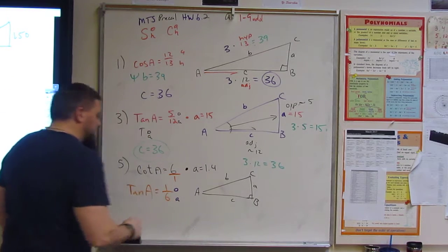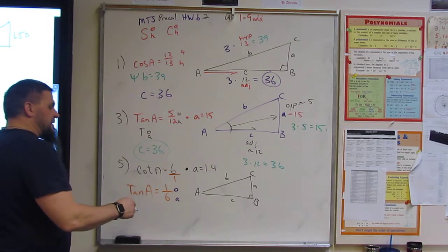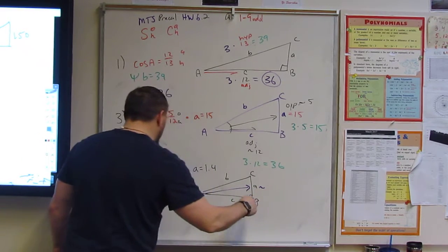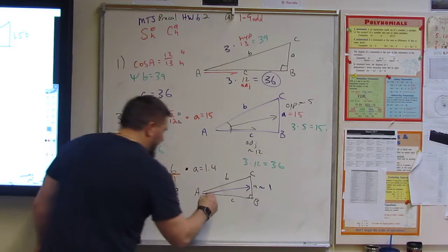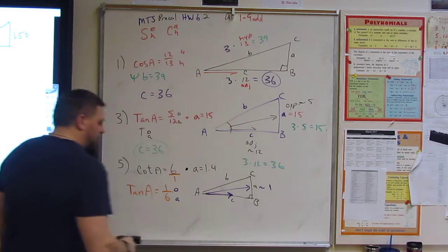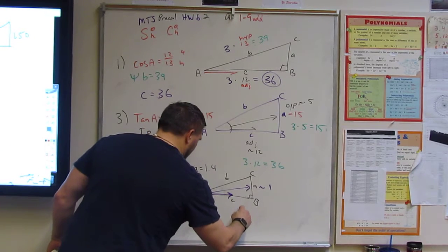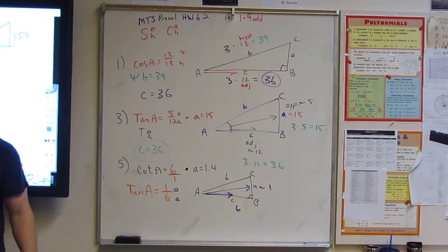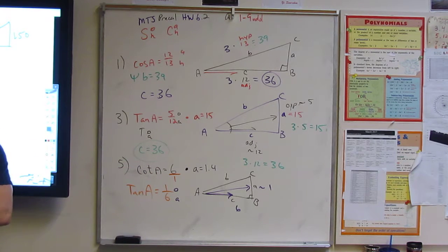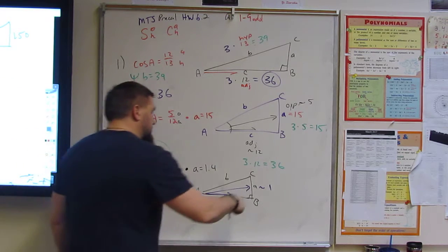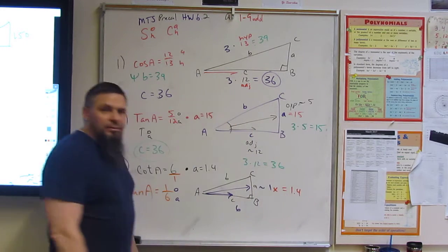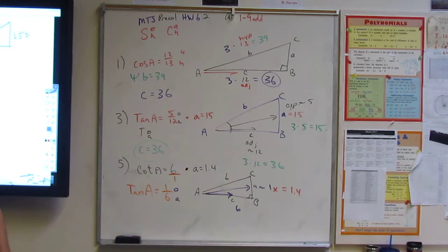Okay? Now, tangent is opposite over adjacent, right? So, opposite over adjacent. So, in this case, we're talking about the opposite being this side. So, it's approximately 1, and then the adjacent side would be C, which is 6, right? But, in this case, they're saying 1 is really 1.4.